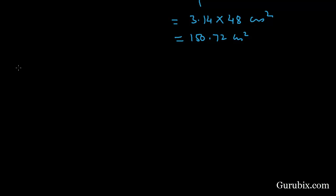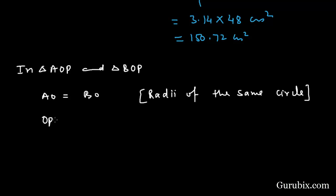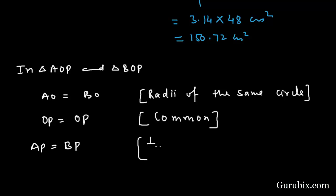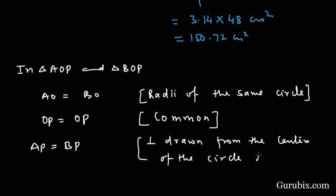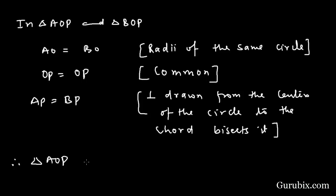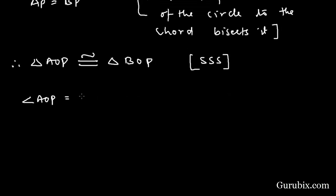Now consider triangles AOP and BOP. AO equals BO as radii of the same circle; OP equals OP as the common side; and AP equals BP because a perpendicular drawn from the center of a circle to the chord bisects it. Therefore, triangle AOP is congruent to triangle BOP by the SSS congruency rule, and angle AOP equals angle BOP by CPCT.